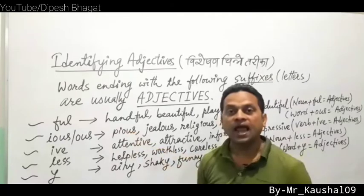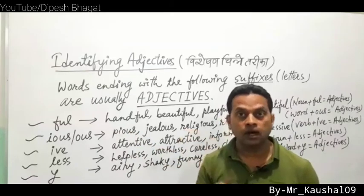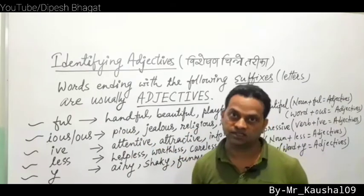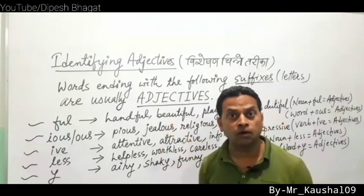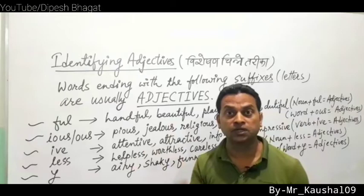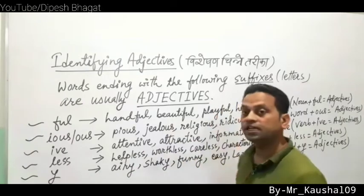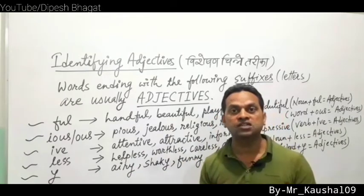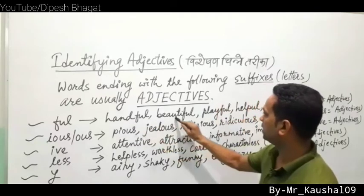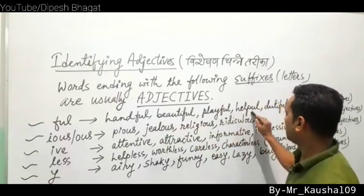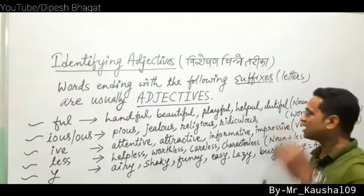For example: hand is a noun — hand + ful = handful (adjective). Beauty is a noun — beauty + ful = beautiful (adjective). Duty is a noun — duty + ful = dutiful (adjective). So handful, beautiful, playful, helpful, dutiful — these are all adjectives formed by noun plus -ful.